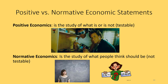A normative economic statement is the study of what people think should be, and is therefore based on subjective opinion or value judgment — it's not really testable. For example, a normative statement might be: the United States should drastically reduce the amount of carbon dioxide it emits every year. Some people think they should; some think they shouldn't. You can't test whether they should. Positive statements are testable; normative economic statements are not.